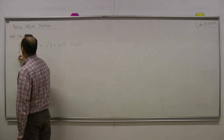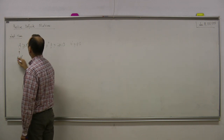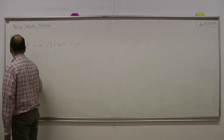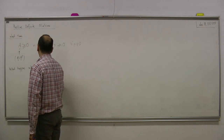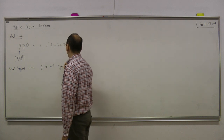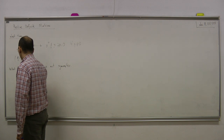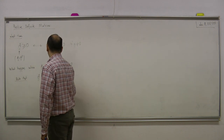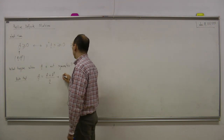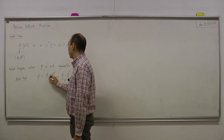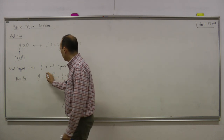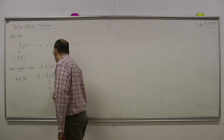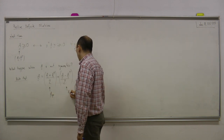Now here is a question. Over here I am assuming A matrix is symmetric. What happens when A is not symmetric? Note that A is equal to (A plus A transpose)/2 plus (A minus A transpose)/2. Clearly, this is the symmetric part and this is the anti-symmetric part.